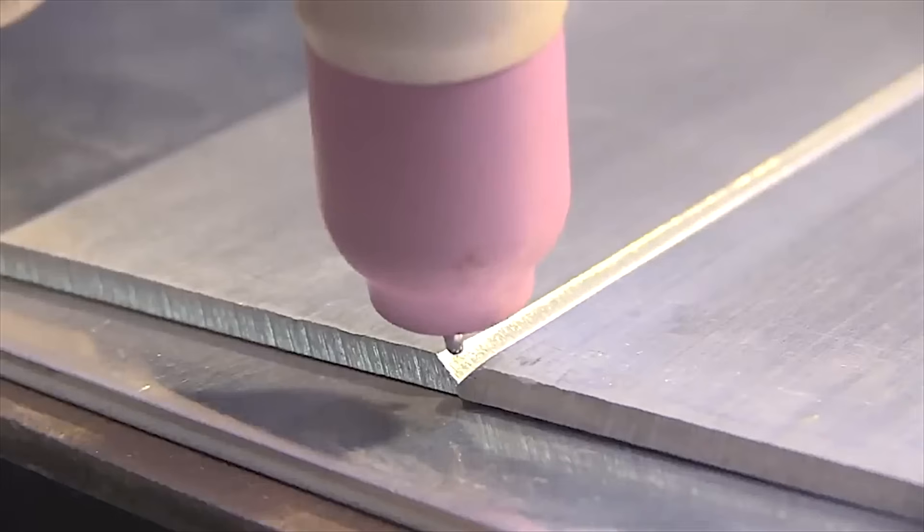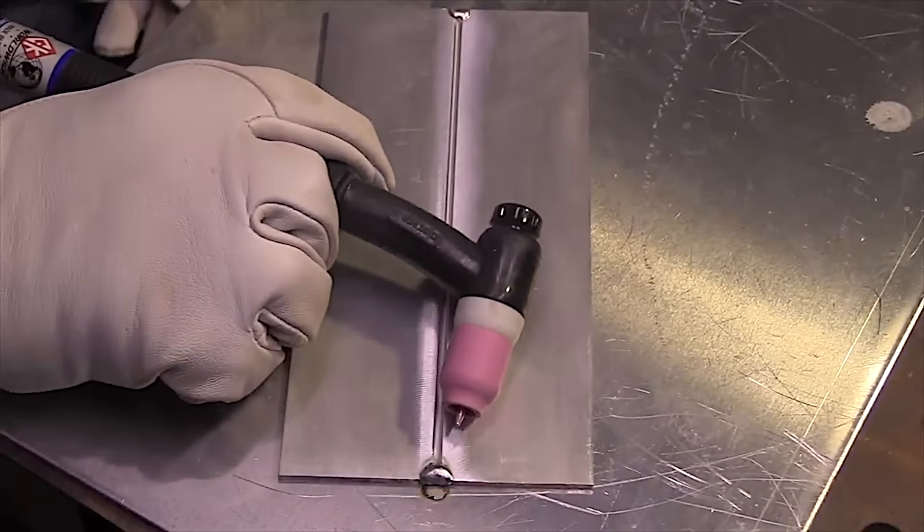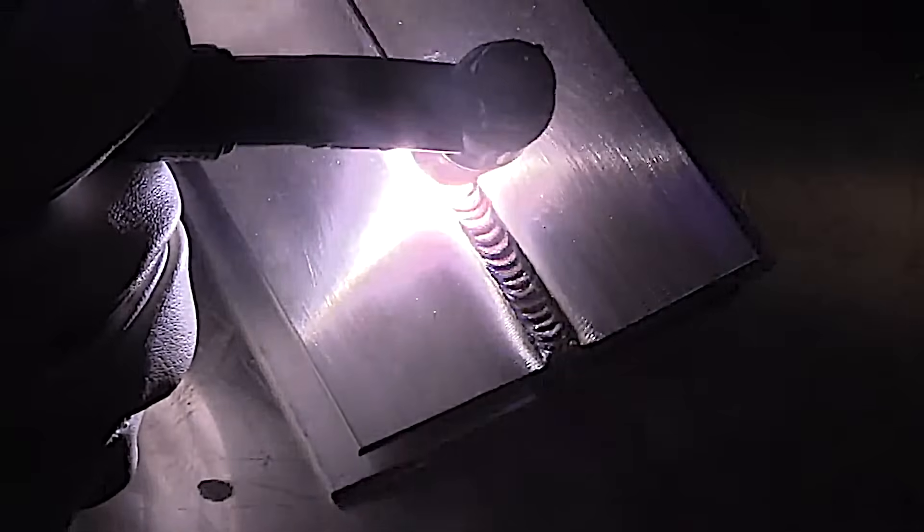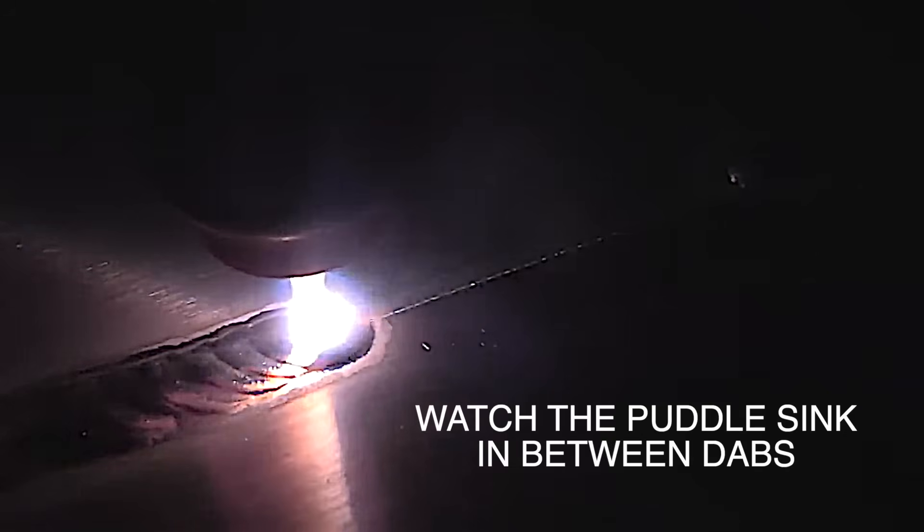Let's take a look at another joint. This is using a number six stubby gas lens. In this case, I put a slight chamfer on this 1/8 inch material just to see if that would really help kind of focus the heat. I only chamfered it about a third the way through. You can definitely penetrate 1/8 inch aluminum without a chamfer, but a little slight chamfer actually helped quite a bit. You'll really be able to see that puddle sink here.